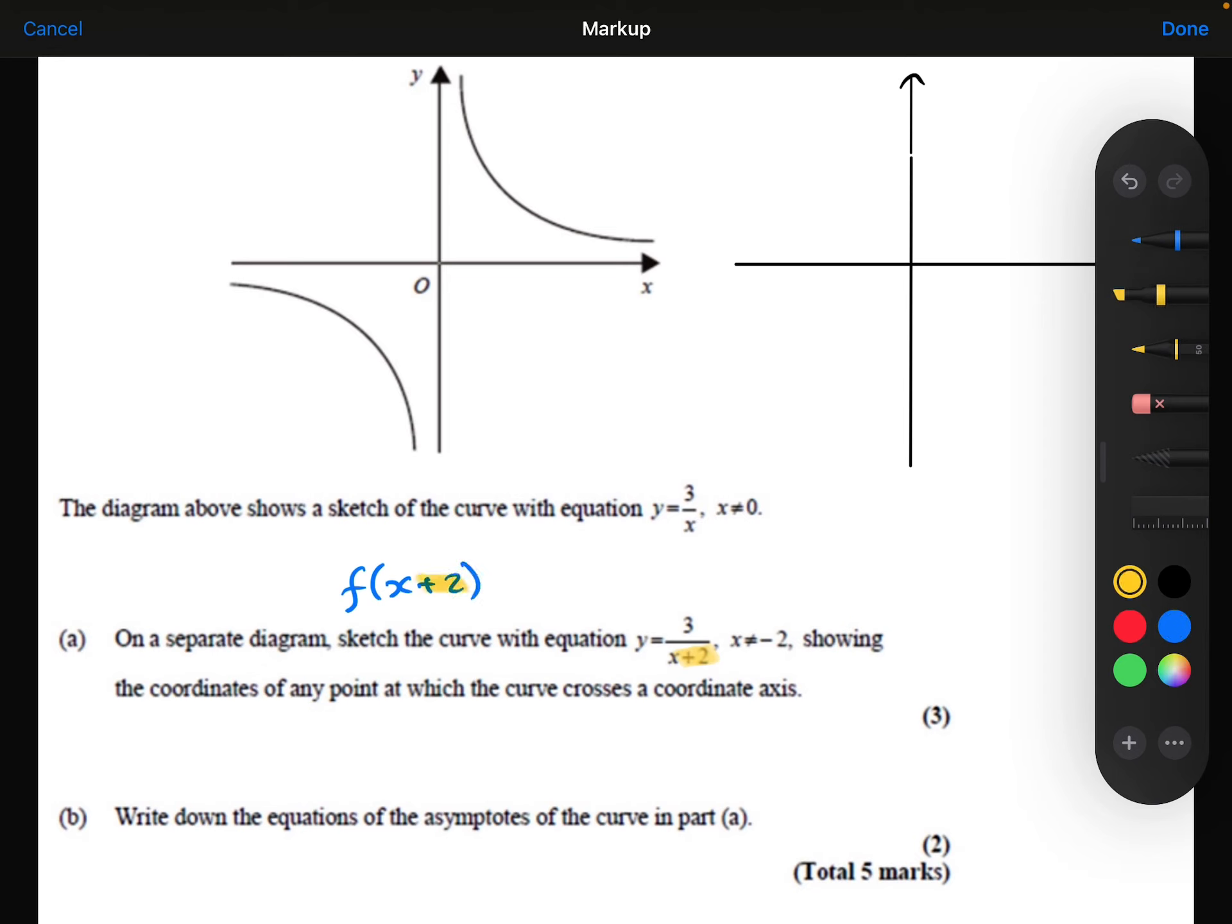It's on the inside of the function, so it affects the x coordinate only. And we do the opposite to what it says. So instead of adding 2, we're going to subtract 2 from all of the x coordinates.